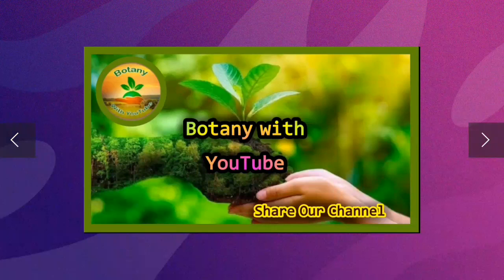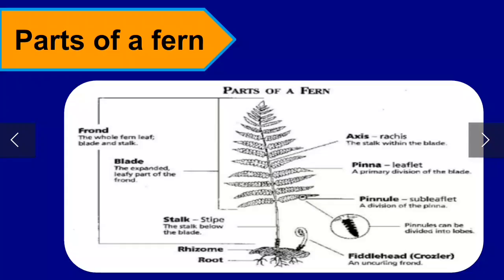Parts of ferns — you can see a diagram of ferns showing: axis, pinna, pinnules, roots, rhizome, rhizoids, stalk, blade, and fronds. These are all parts of ferns.